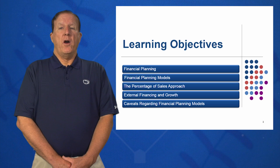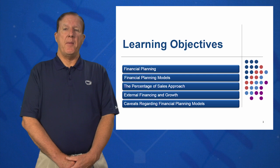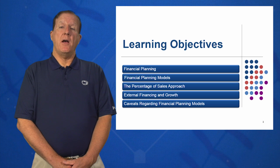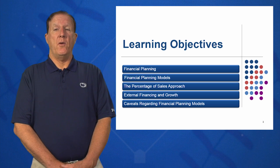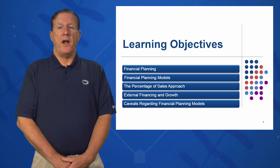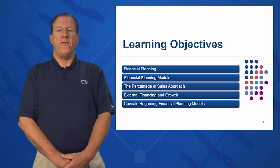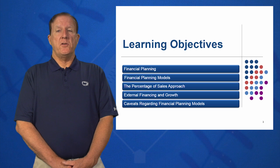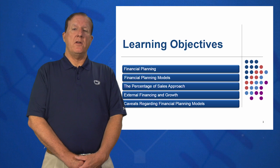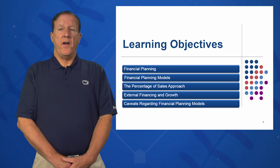Learning objective four covers external financing and growth — how much financing do I need to grow? It takes money to make money, and external financing is required if we want to grow in many cases. Finally, objective five looks at caveats regarding financial planning models. Looking ahead, there are no definitive answers. Often administration won't tell you the growth rate they're looking for — you iterate, propose a growth rate, then re-propose. We'll look at these caveats regarding financial planning models.